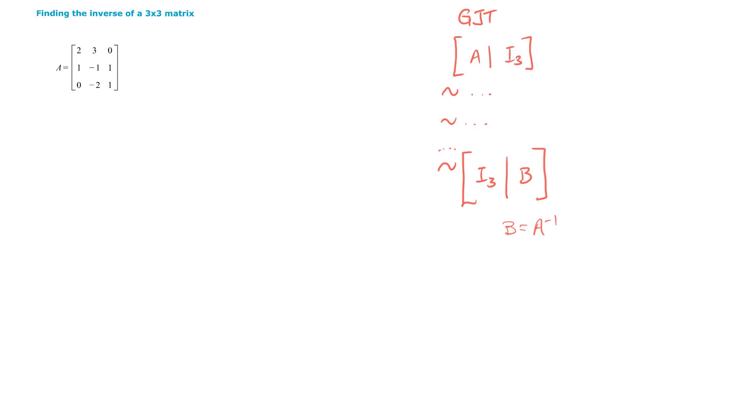So let's attempt to find the inverse of A using the Gauss-Jordan technique. Let's set up our 3 by 6 augmented matrix. And we're going to use elementary row operations to get the leading one in the upper left-hand corner. So let's switch row 2 and row 1.